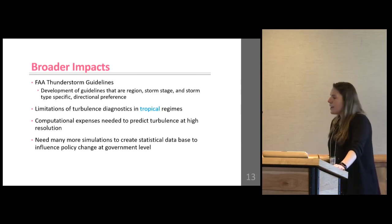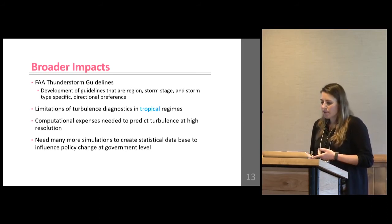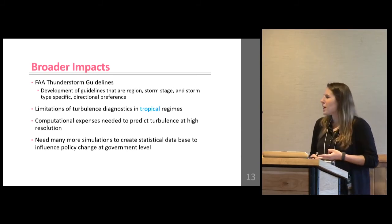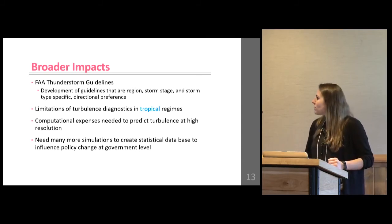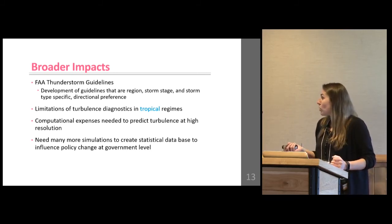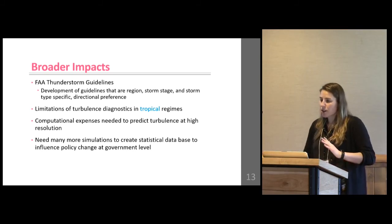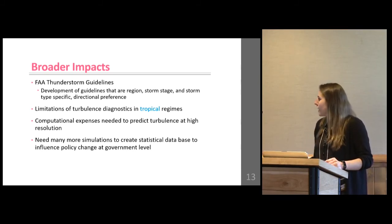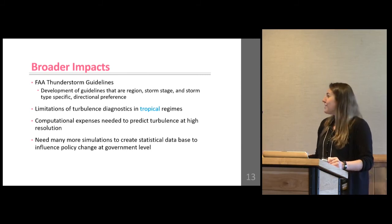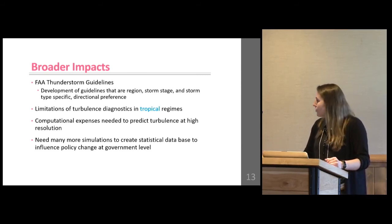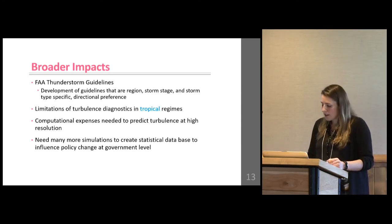The broader impacts of this study: yes, it's only six cases, but we know the FAA guidelines are not region-specific, not storm-stage specific, and not storm-type specific. Isolated cells versus a mesoscale convective system have different characteristics of turbulence, and we need to start addressing that — especially if we want aviation to be more efficient. Classic mid-latitude turbulence diagnostics are not performing well in the tropics, which is a concern as more planes fly in that area. The computational expense is needed to predict turbulence — high resolution simulations are expensive, and putting that into an operational setup will be a challenge. We definitely need more simulations, and a field campaign would be great to really influence policy change at the government level.